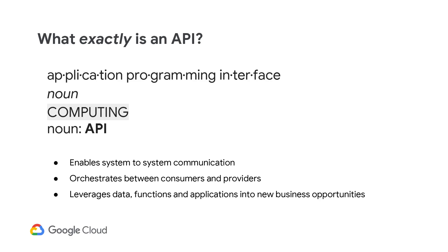I often get this question from my customers at the start of an engagement: What is an API? The formal definition of API is application programming interface. It is a way for systems to communicate with each other. It leverages and reuses data, functions, and applications, and combines them into new business opportunities. Furthermore, it connects consumers of data, systems, and applications with providers of the same.